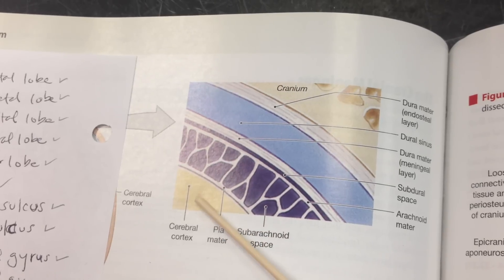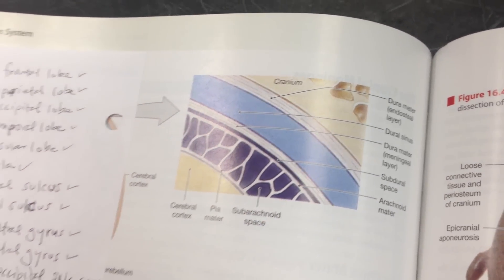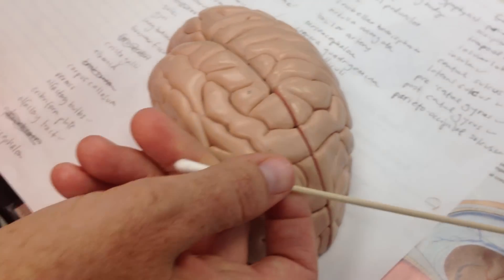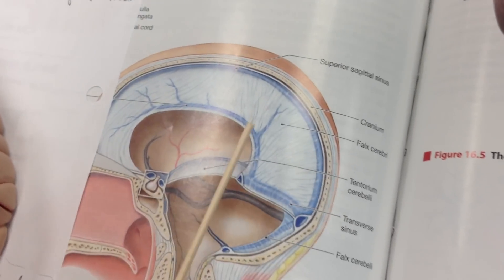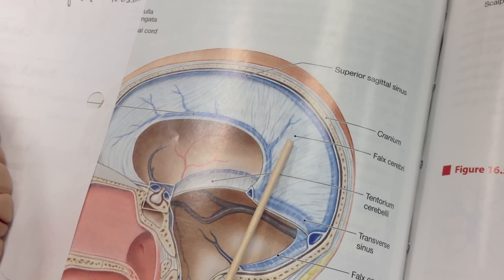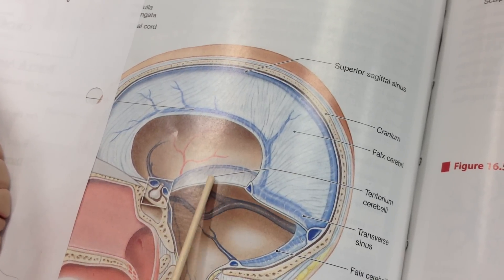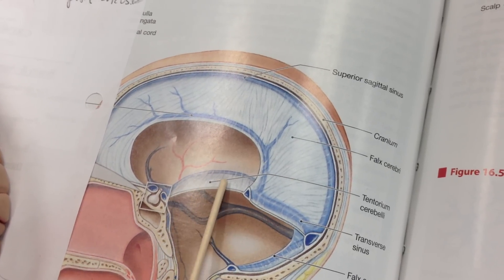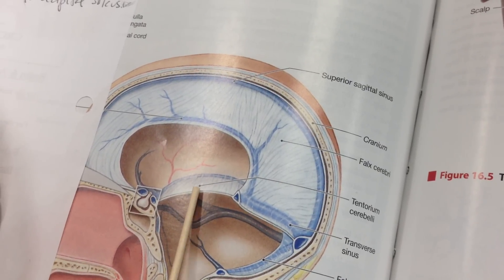And this is the cerebral cortex. For this picture, there's the falx cerebri, and then in here is the tentorium cerebelli.